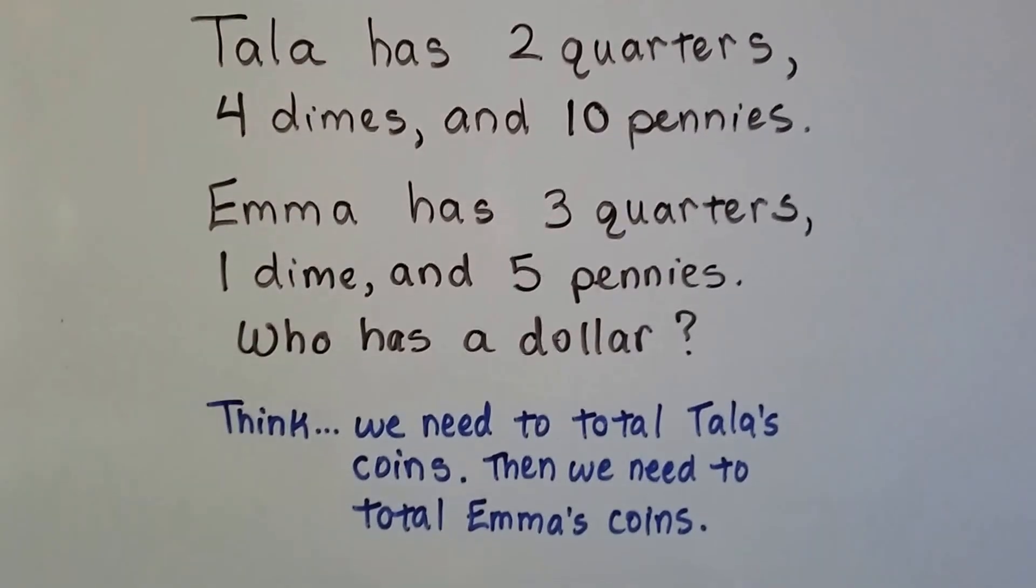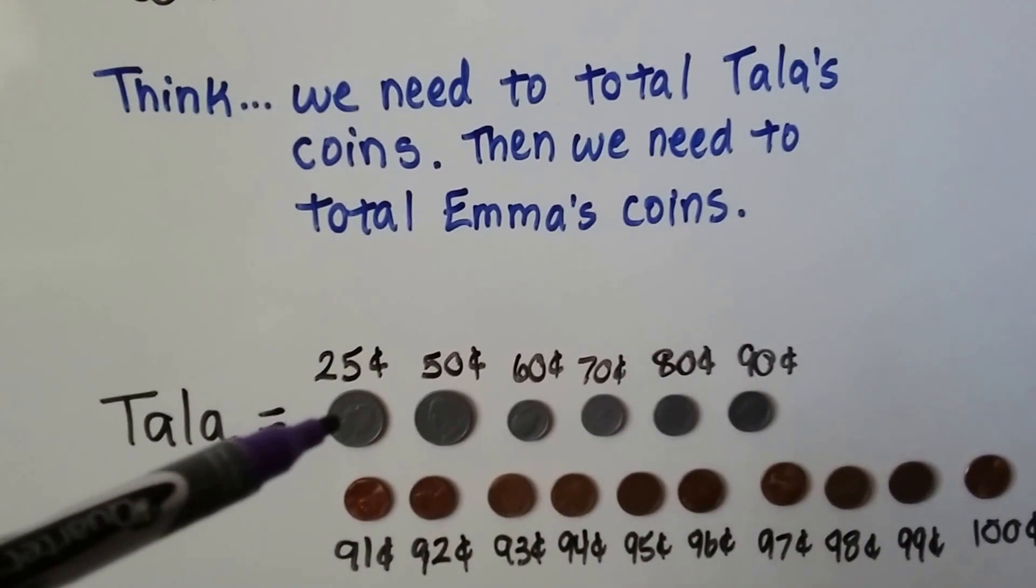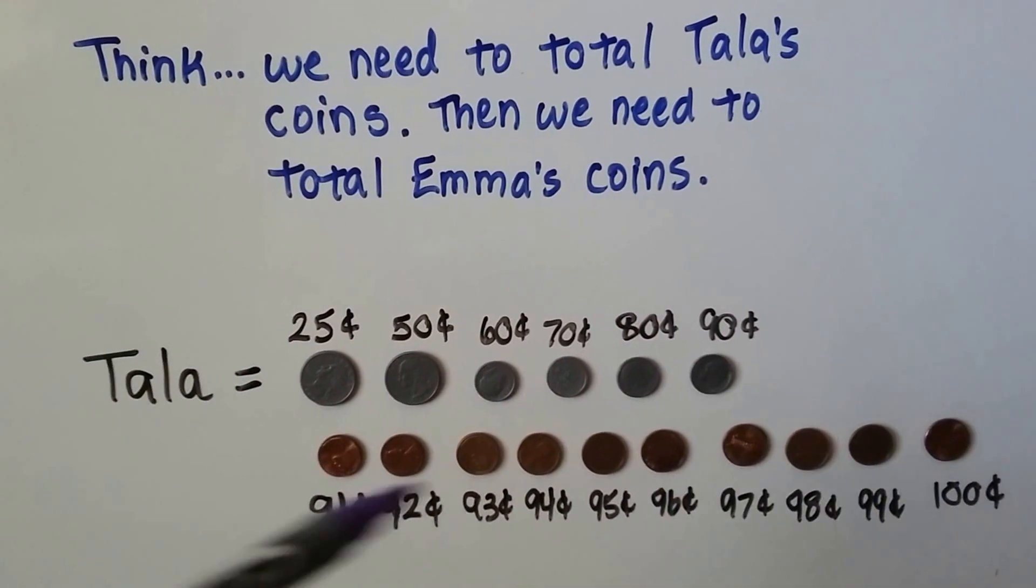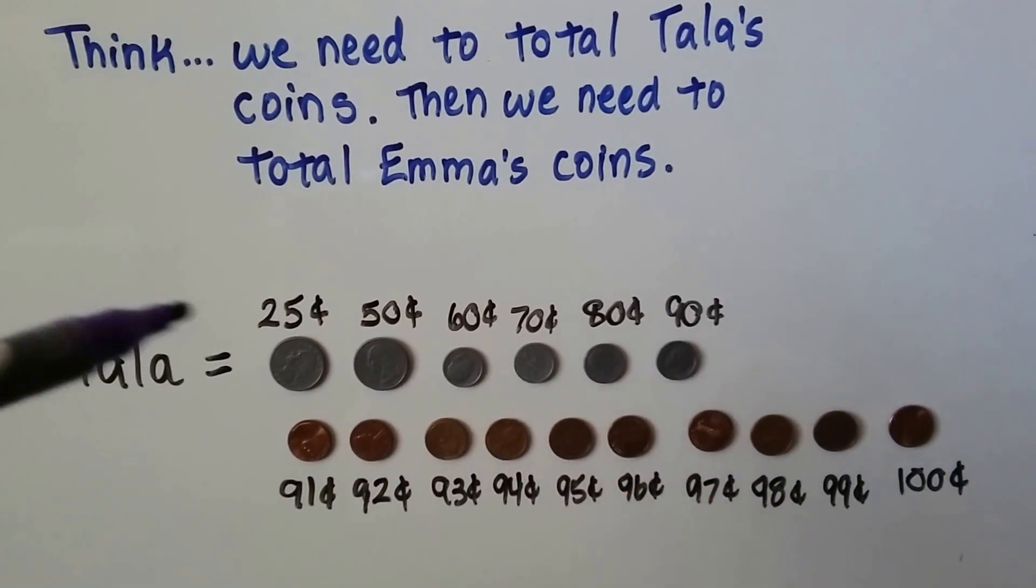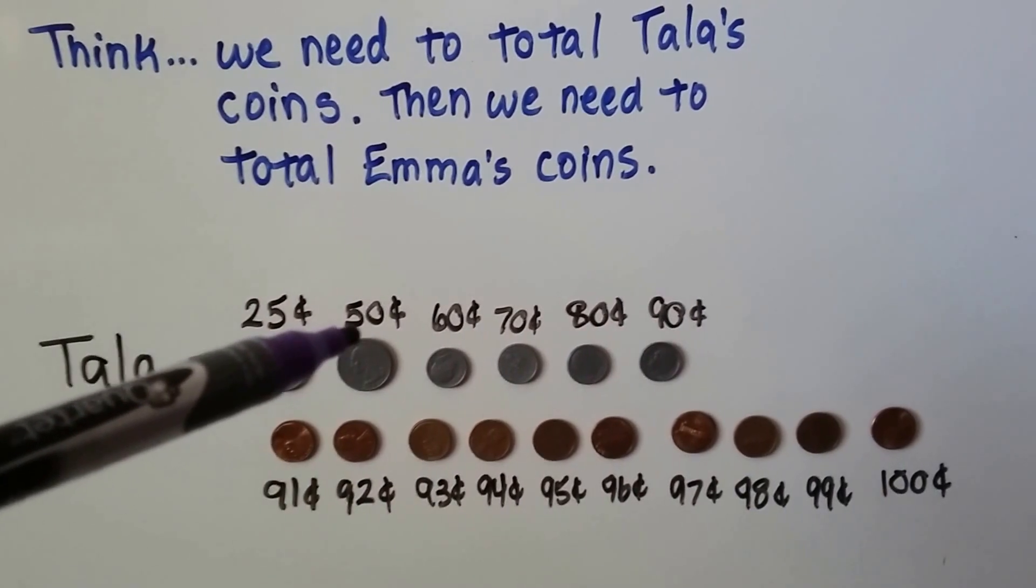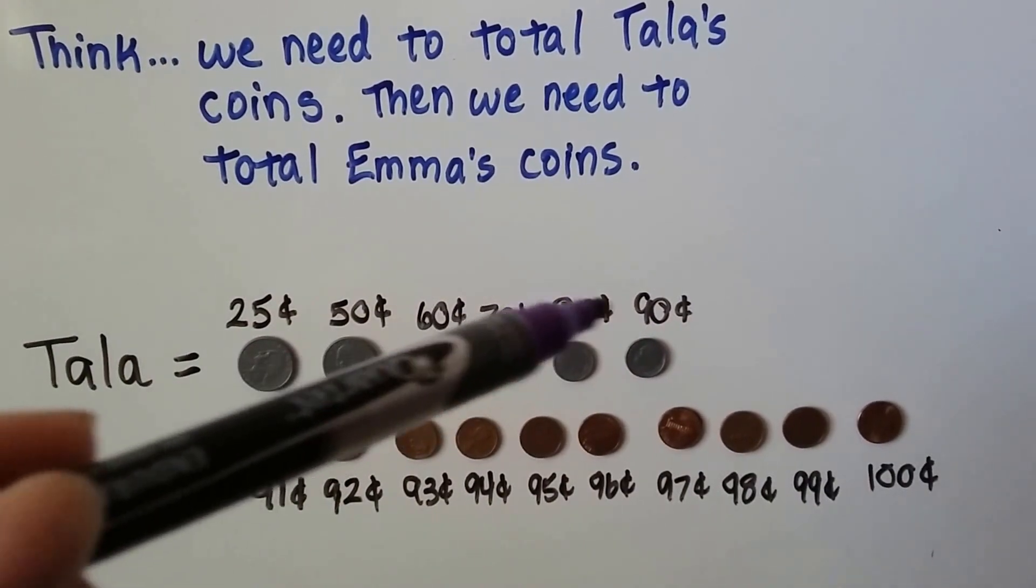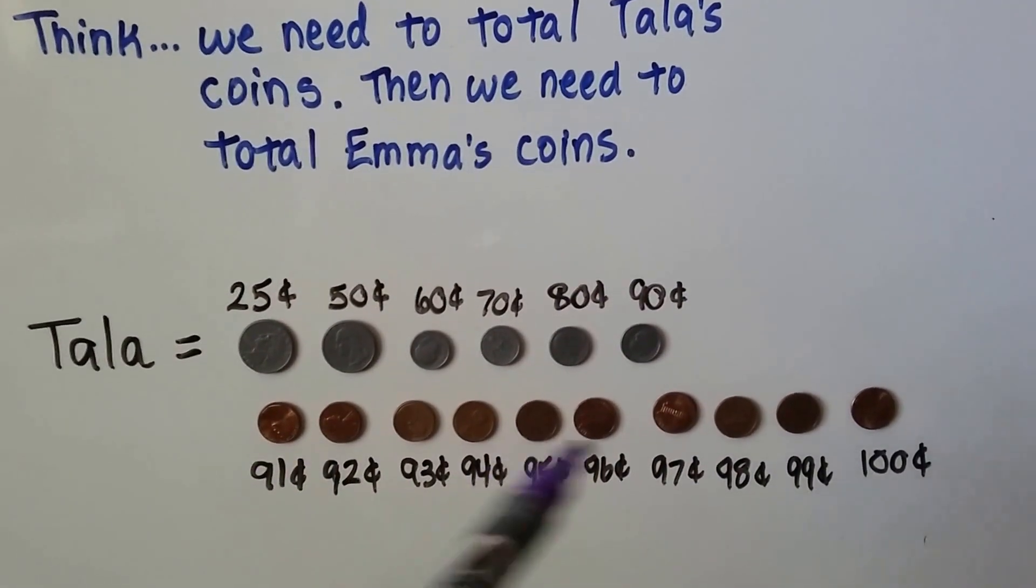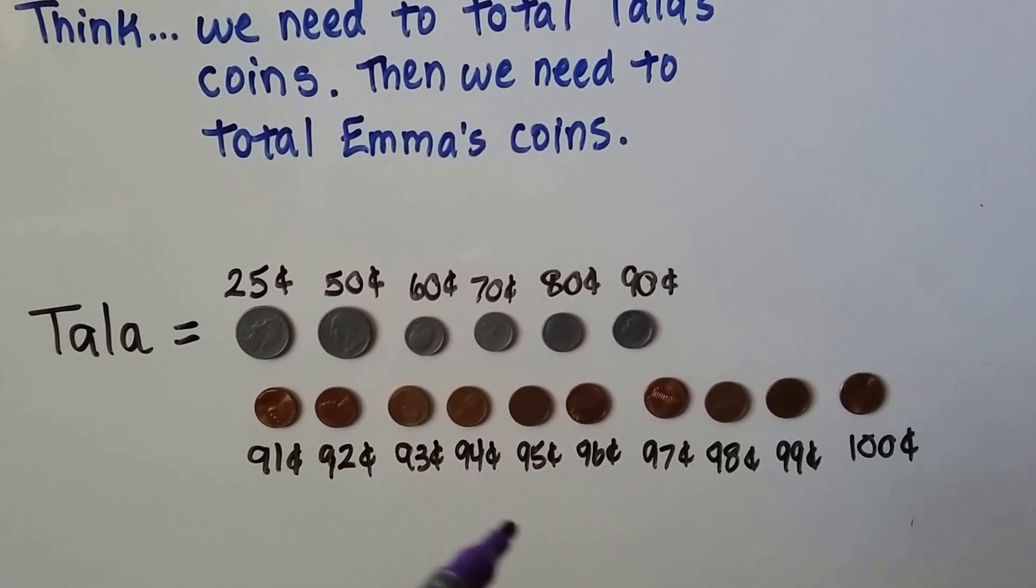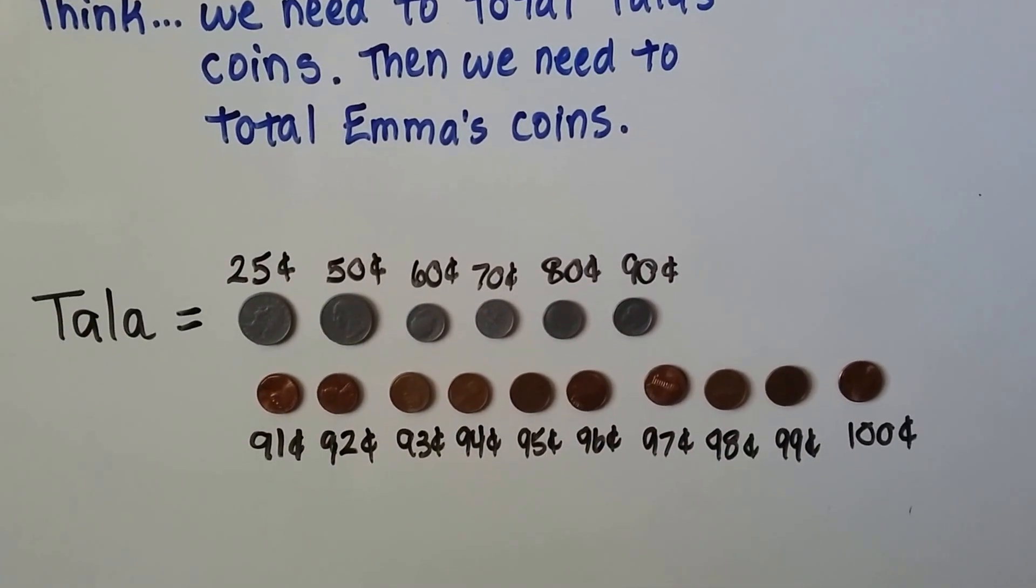Here's Tella's. She has two quarters, four dimes, and 10 pennies. We count the quarters: 25, 50. Now we count the tens by skip counting. We're at 50, 60, 70, 80, 90. Now we count the pennies: 91, 92, 93, 94, 95, 96, 97, 98, 99, 100 cents. 100 cents is a dollar.